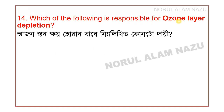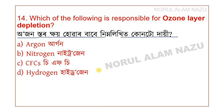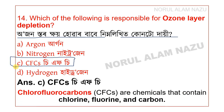Question 14: Which of the following is responsible for ozone layer depletion? The options are argon, nitrogen, CFCs, and hydrogen. The answer is CFCs — chlorofluorocarbons, which are chemicals containing chlorine, fluorine, and carbon, and are responsible for ozone layer depletion.